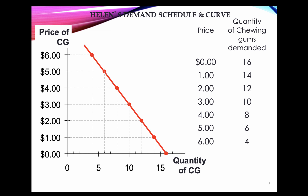A line going through all these points gives us the demand curve for Helen. The product we're thinking about in this example is chewing gums, so this is an individual demand curve.